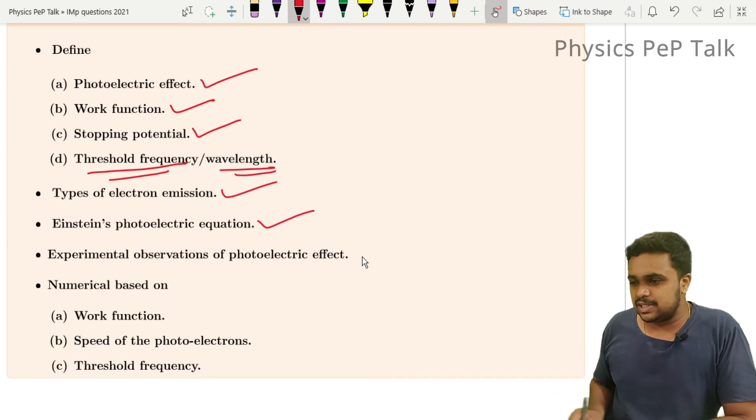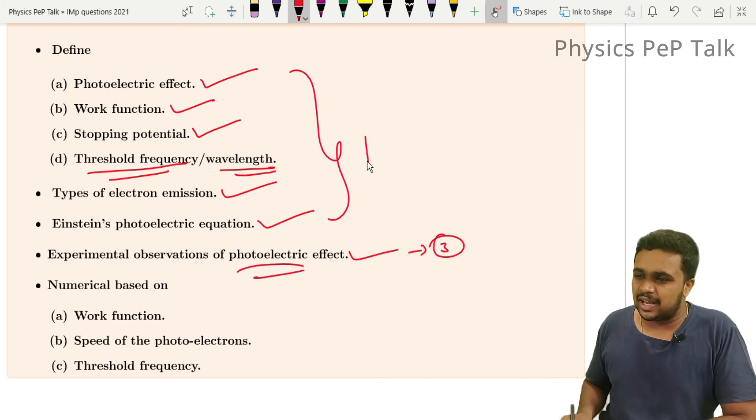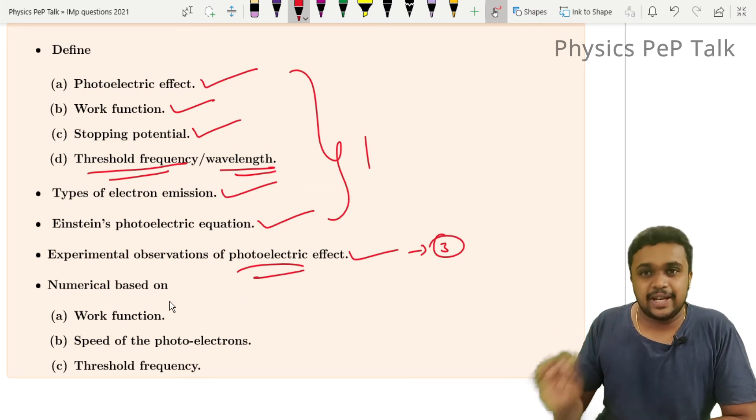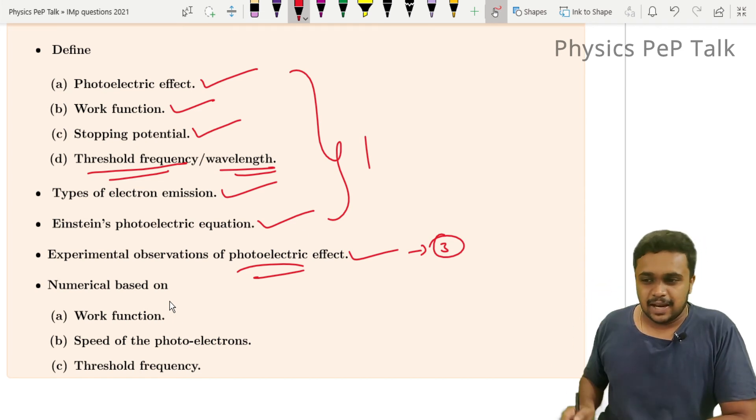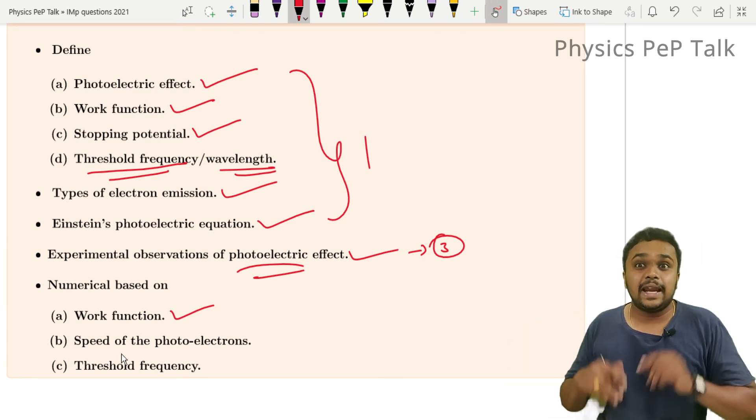Experimental observations of photoelectric effect. This is the question of three marks. This is the question of almost one mark. Numerical based on the model paper. This year you should get a problem from this chapter. The problem is that the work function needs to be done with speed of photoelectrons, wavelength, and threshold frequency. The question of electron volt.